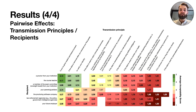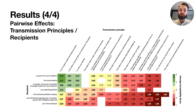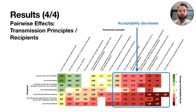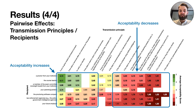The final pair we created combines transmission principles and recipients. Since we only asked the baseline question about information types, we had to use a different baseline value for this pair. We chose 'if the data is viewed or analyzed by a real person' for this, as this is the most basic way of observing students during an exam — both offline and online — regardless of what kind of software is being used. Here we can again see many significant decreases of acceptability for certain transmission principles, as well as many increases.